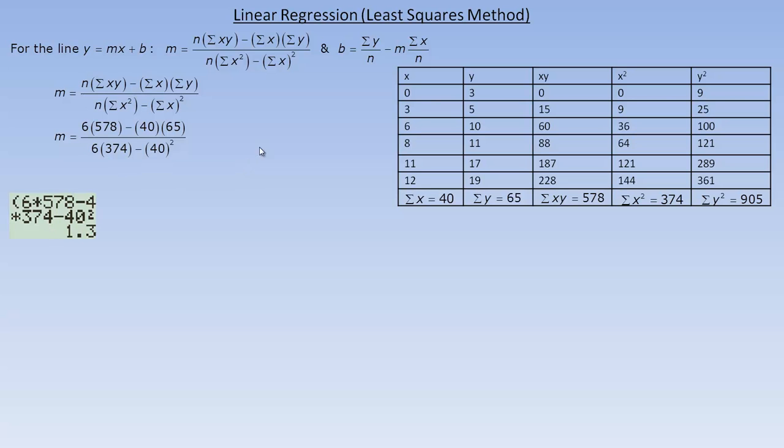I did the calculation just to show that this is correct. In the numerator here, 6 times 578, minus the product of 40 and 65, and then close my bracket, divided by 6 times the 374, minus the 40 squared. And it works out to 1.3478, etc. There's my slope value. That's the coefficient of x in the equation.